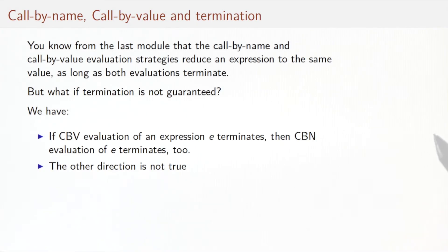If we look at call-by-name and call-by-value and how they relate to termination, then we know that both evaluation strategies will always reduce to the same value provided both evaluations terminate. But what if evaluations do not terminate? We have seen in the last session that some expressions actually do not give a value in a finite number of steps.